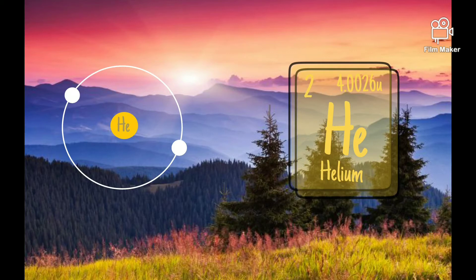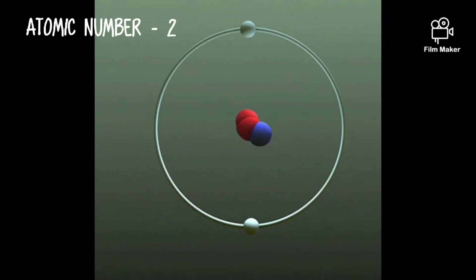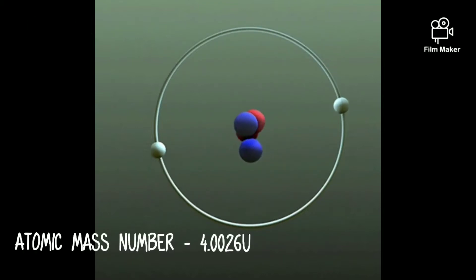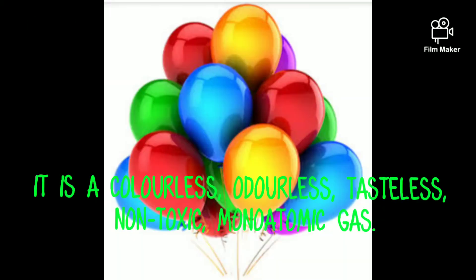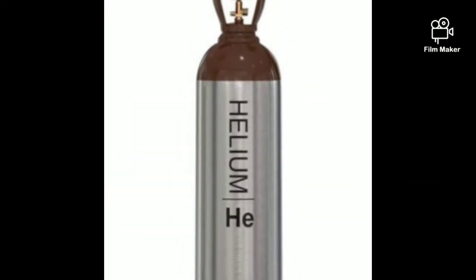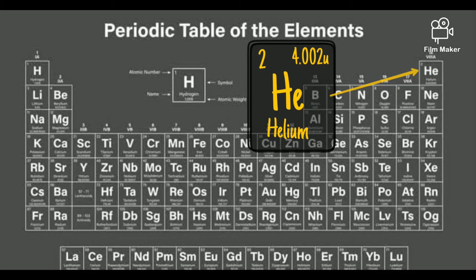Helium element. Helium is a chemical element with symbol He. It has atomic number 2 and atomic mass of 4.0026u. It is a colorless, odorless, tasteless, non-toxic, monoatomic gas. It is the first element in the noble gas group in the periodic table.